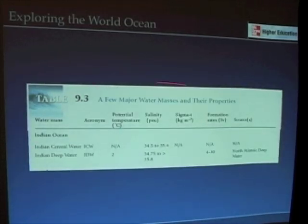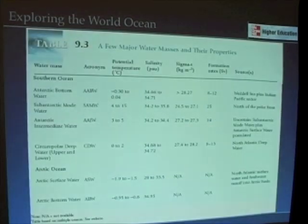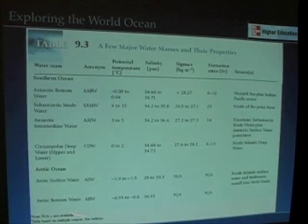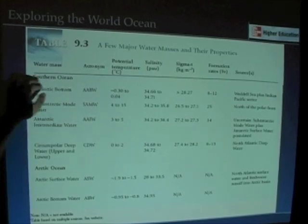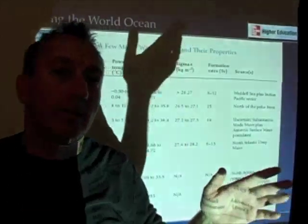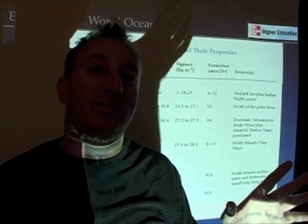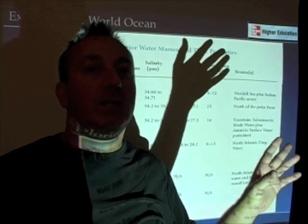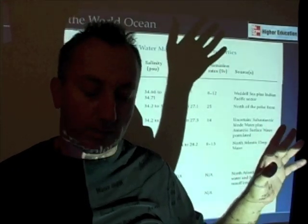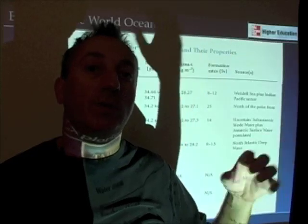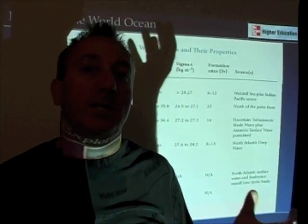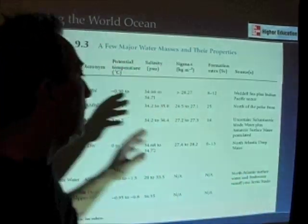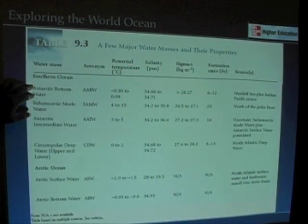Here are a few water masses for the Indian Ocean as well. In the Antarctic and Arctic Oceans, we have a similar situation, and here I want to really point out Antarctic bottom water. Antarctic bottom water is ostensibly the densest water that we find in the world ocean. Now, there may be regionally — like up in the Barents Sea and maybe parts of the Arctic Ocean — water that's a little bit denser, but by and large, of the major water masses, Antarctic bottom water is the densest.